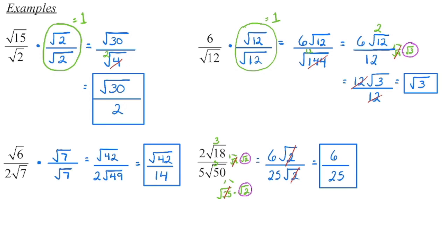For the first practice example, 6 divided by 7 does not divide evenly, so we rationalize by multiplying by the square root of 7 over the square root of 7 to eliminate the radical in the denominator. Multiplying the numerators: the radicands give us 42, with a coefficient of 1. The denominator: 7 times 7 gives the perfect square 49, and the square root of 49 is 7. We're left with the square root of 42 over 14. There is no perfect square remaining in 42, so that's our final answer.